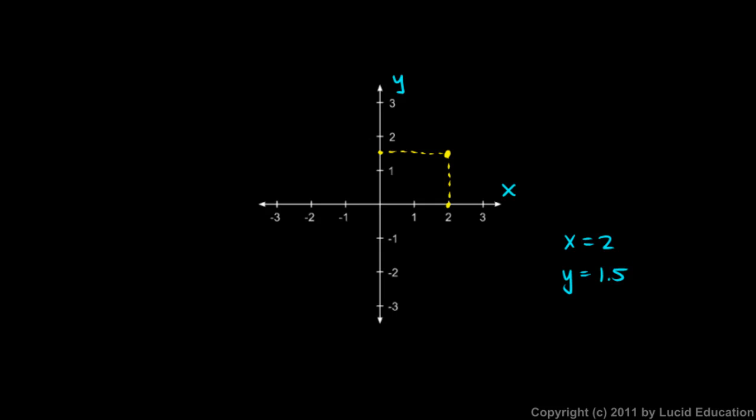And it would actually be more commonly written like this, parentheses 2, 1.5. And this is an ordered pair. We understand that the order here is always x first and y second, so they call that an ordered pair. The point here is that in two dimensions, we can indicate the position by using two variables. Any point in this entire x, y plane could be indicated by specifying the x and the y values.